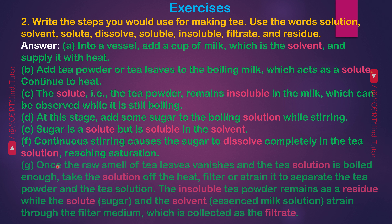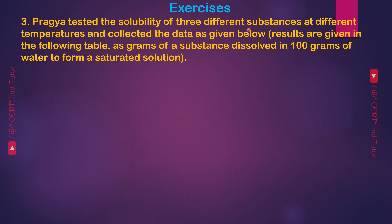F — Continuous stirring causes the sugar to dissolve completely in the tea solution, reaching saturation. G — Once the raw smell of the tea leaves vanishes and the tea solution is boiled enough, take the solution off the heat, filter or strain it to separate the tea powder. The insoluble tea powder remains as a residue, while the solute (sugar) and the solvent (essenced milk solution) strain through the filter medium, which is collected as the filtrate.